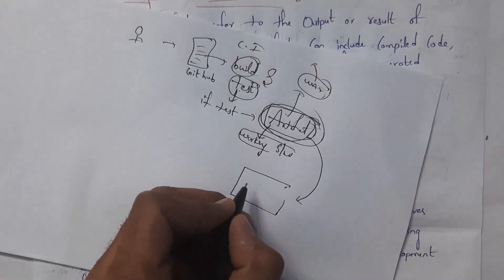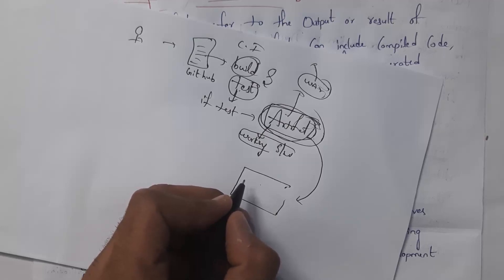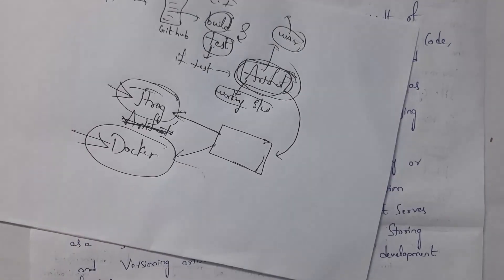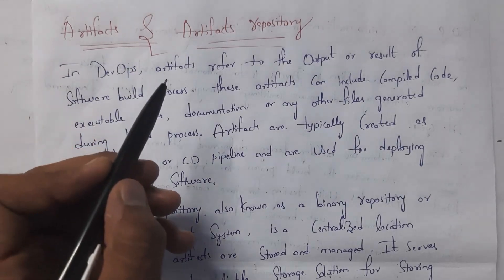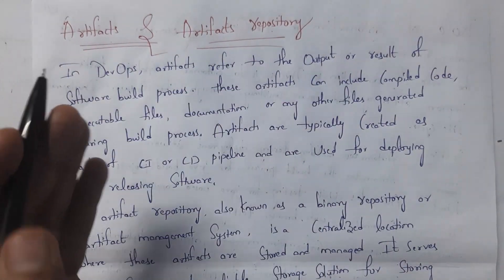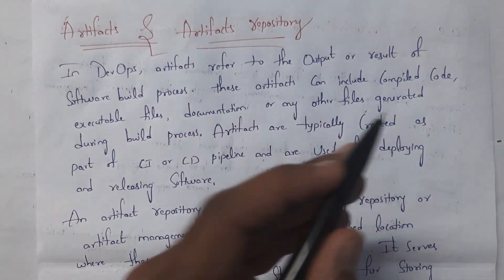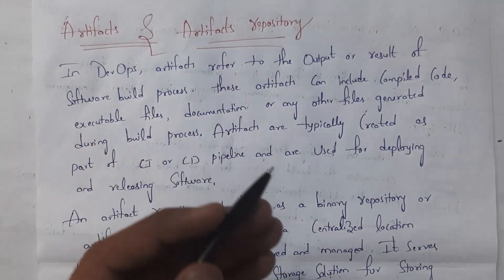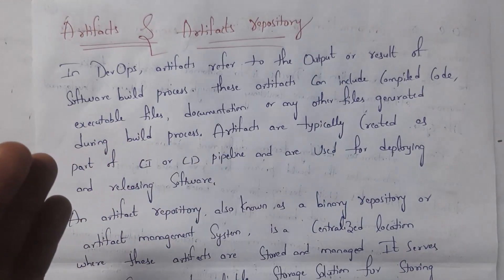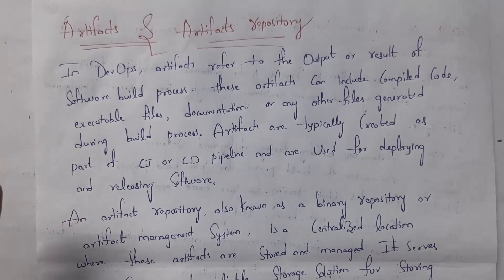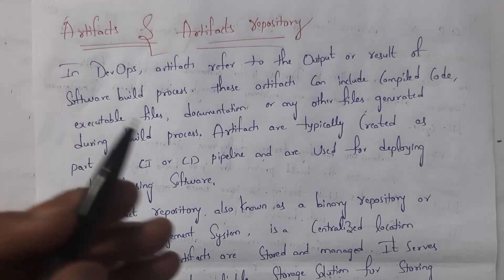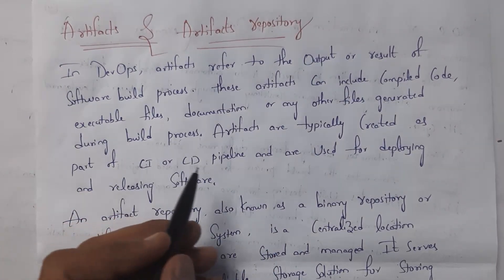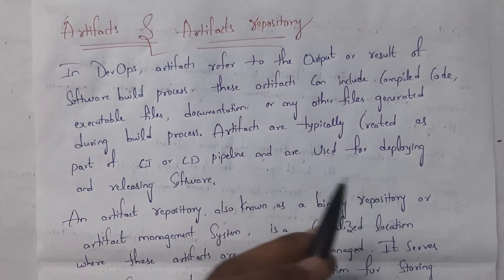We store artifacts in one location and call that location a repository. So an artifact repository is where artifacts are stored. There are two types of artifact repositories: JFrog and Docker. In DevOps, an artifact refers to the output or result of the software build process. These artifacts can include compiled code, executable files, documentation, or any other files generated during the build process. Artifacts are created as part of the CI/CD pipeline and used for deploying and releasing software.